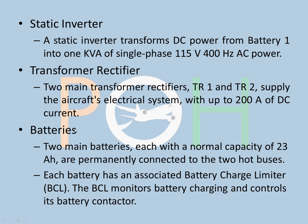Batteries: two main batteries, each with a normal capacity of 23 amp-hours, are permanently connected to the two hot buses. Each battery has an associated battery charge limiter, called BCL. The BCL monitors battery charging and controls the battery contactor — if charge is going down, it connects and charges from the bus. In case of emergency, batteries are generally used to start the APU.